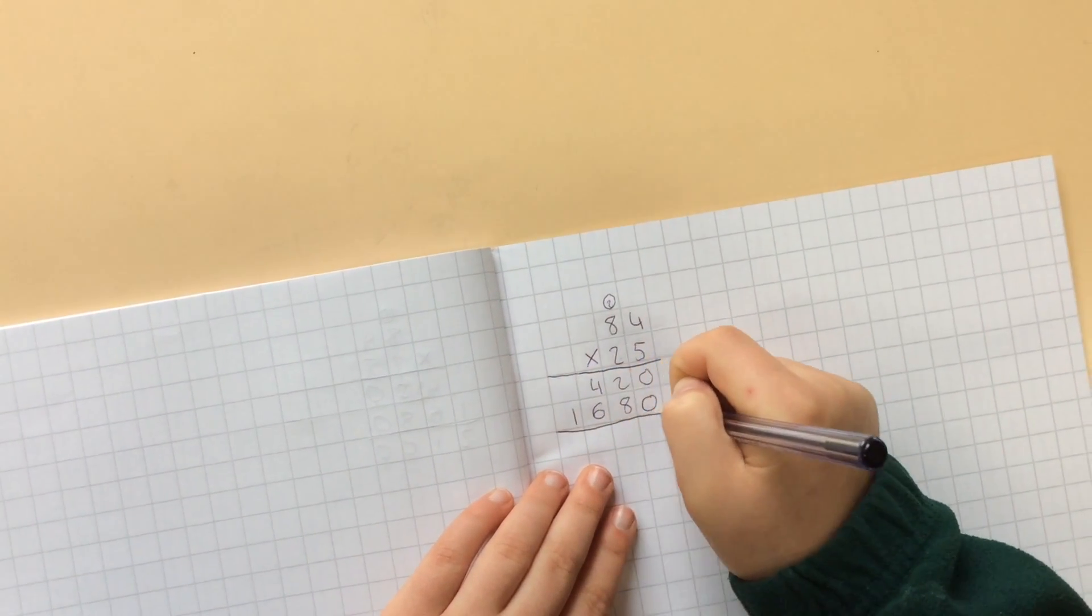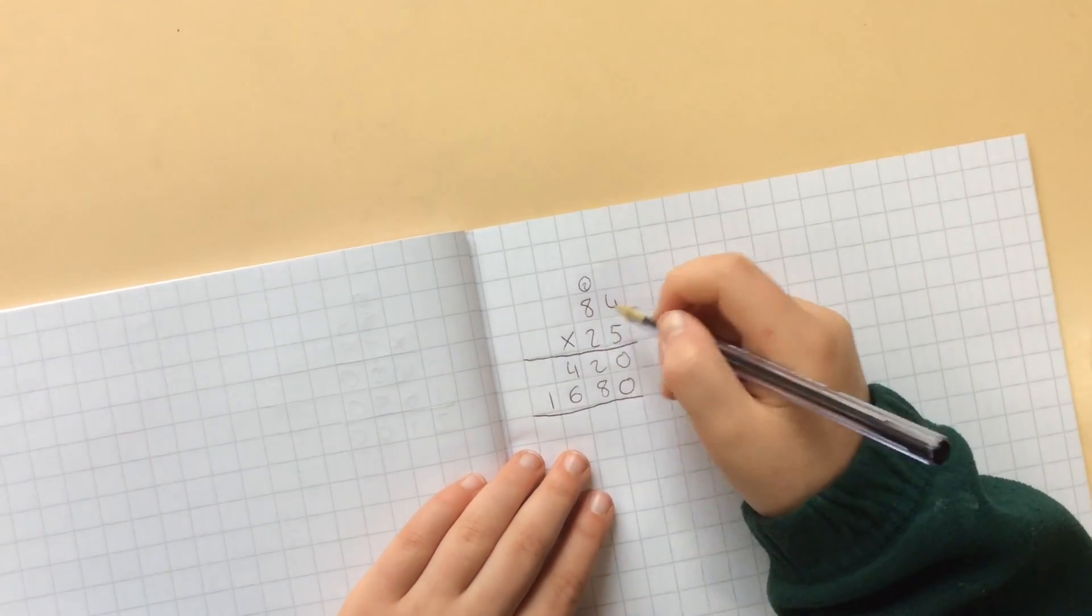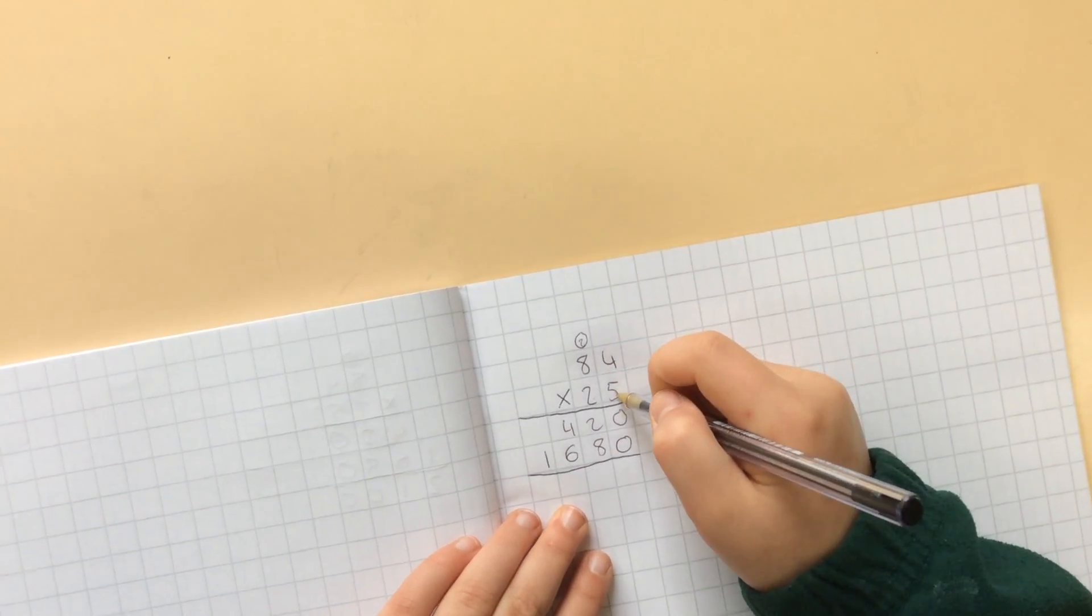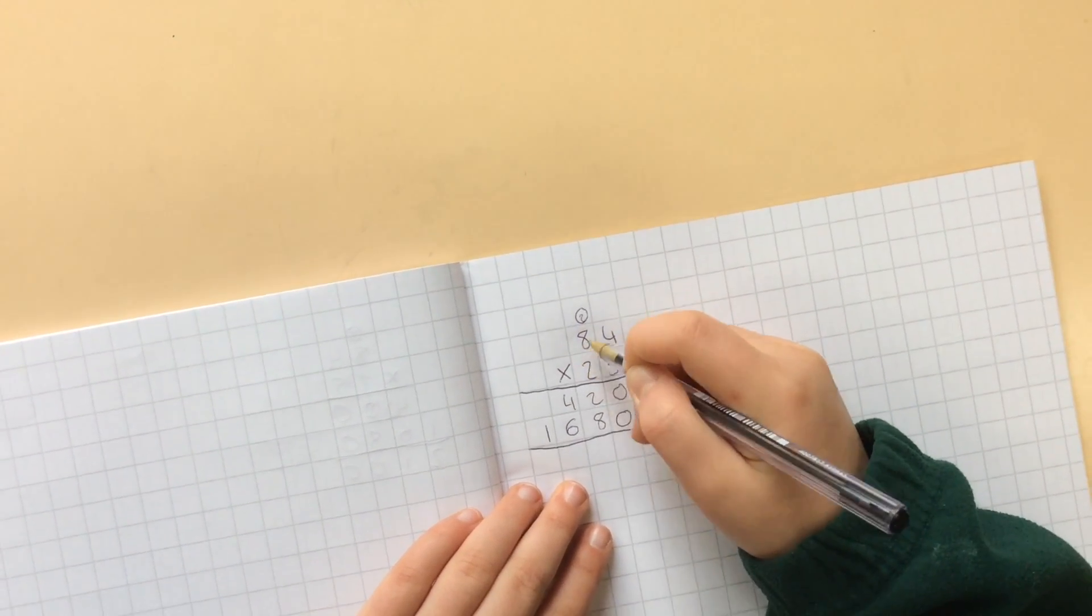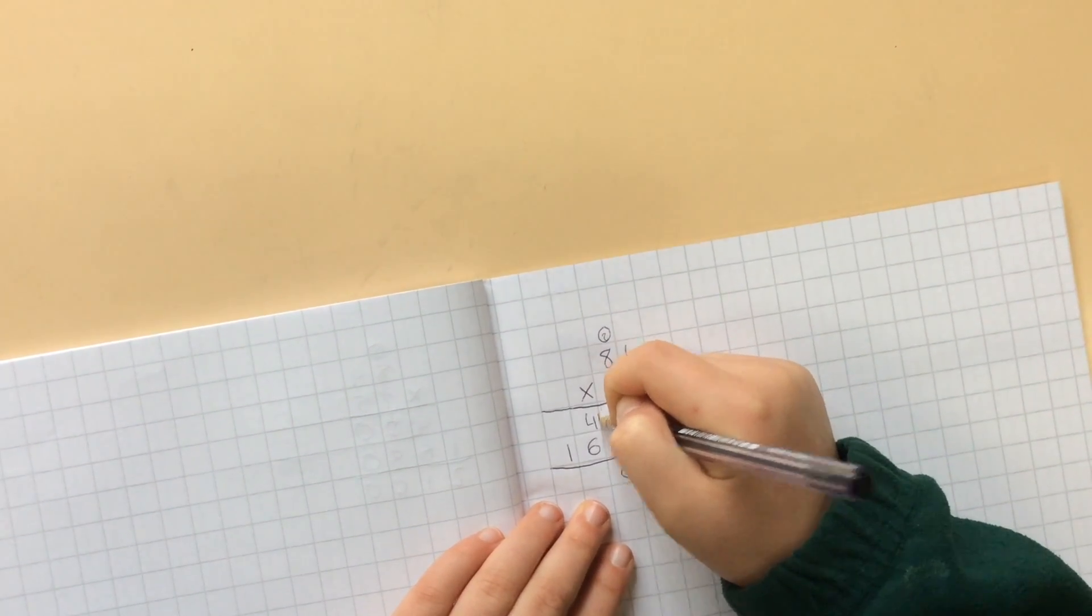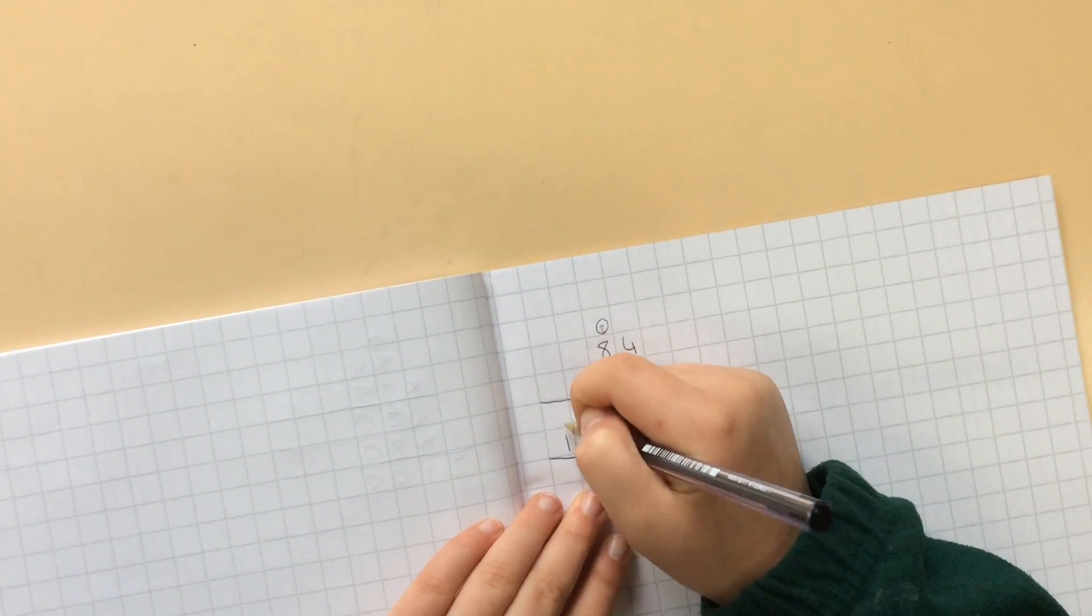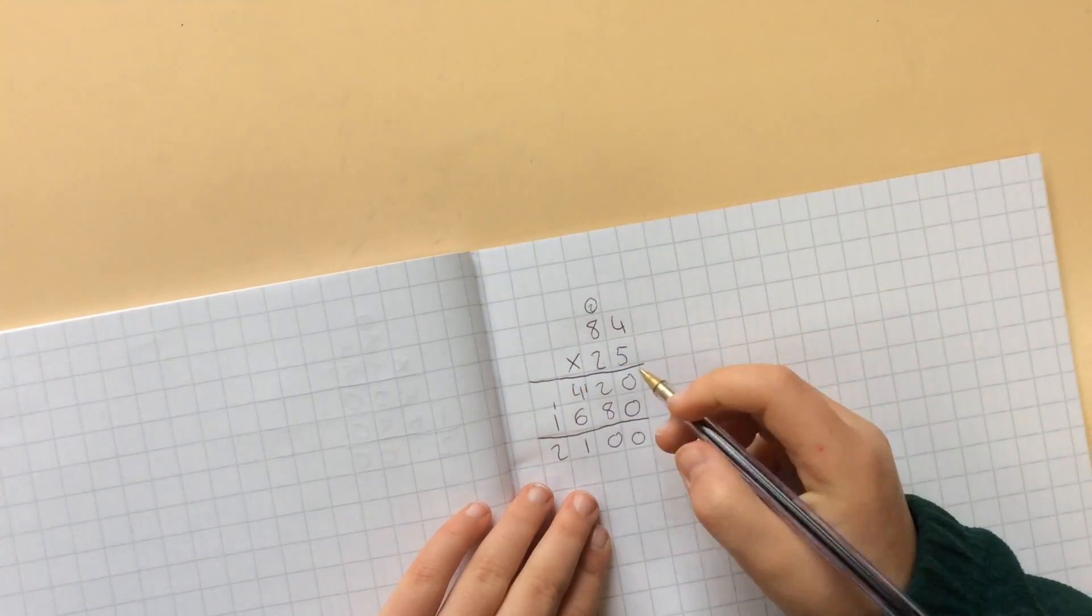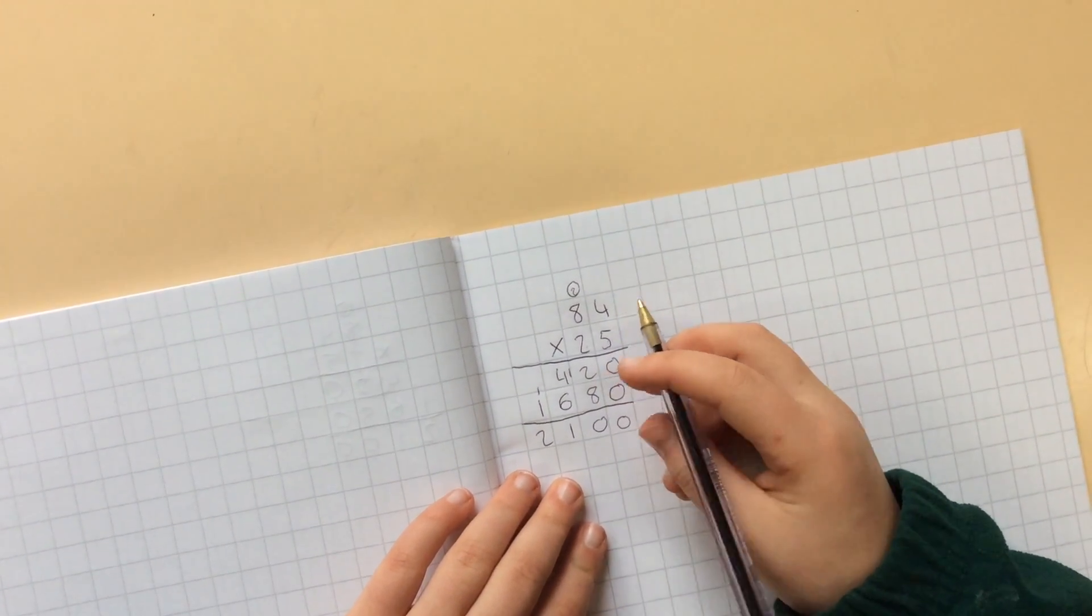Now I'm just going to add these up because what we've actually done is partitioned it, in a way, to make it 5 times 84 and 20 times 84. So just going to add it now. And that will give us the answer of 2,100.